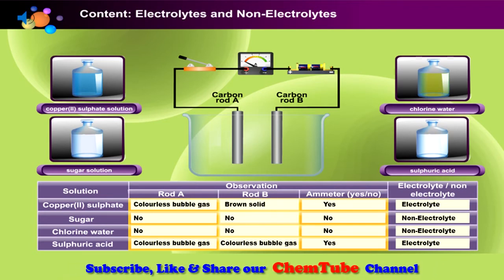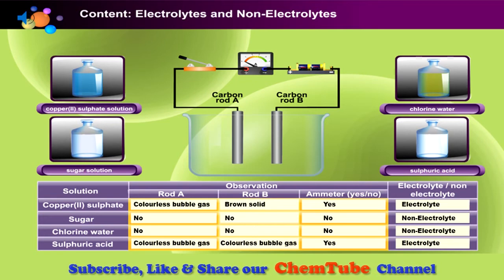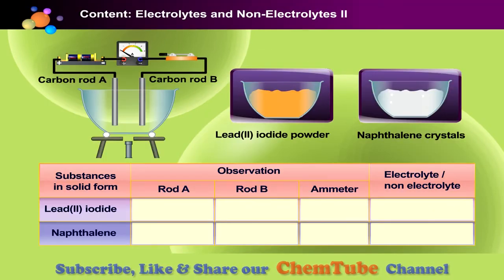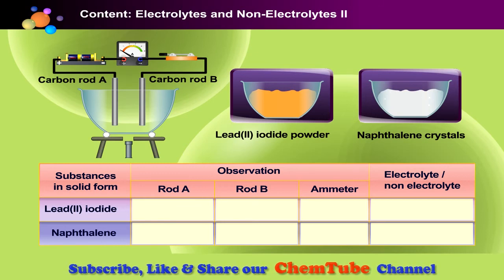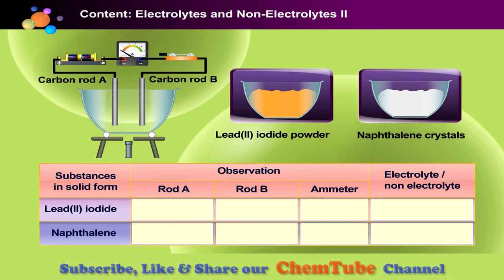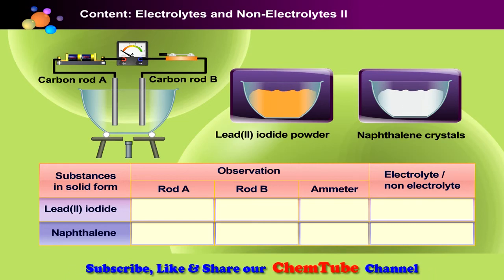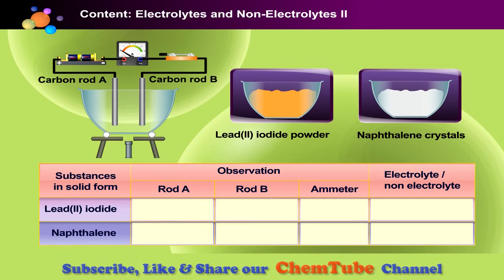Not all aqueous solutions are electrolytes. Let's investigate which of these substances is an electrolyte and which are not. You are given two substances: lead(II) iodide powder and naphthalene powder. Lead(II) iodide and naphthalene powder are not electrolytes in solid state. Will they behave the same if in molten state? Let's find out.